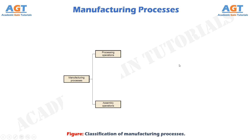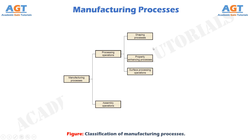A classification of manufacturing processes is presented in this figure. Some of the basic processes used in modern manufacturing date from antiquity. As we have just discussed, manufacturing processes can be classified into processing operations and assembly operations. Processing operations can be further divided into shaping processes, property enhancing processes, and surface processing operations. The assembly operations can be further divided into permanent joining processes and mechanical fastening.